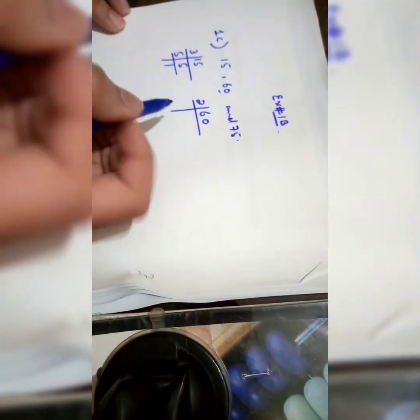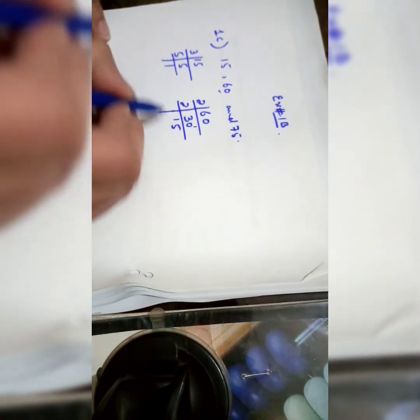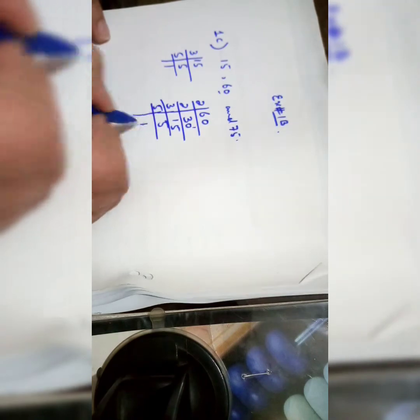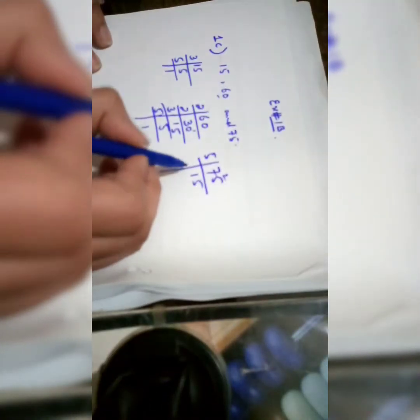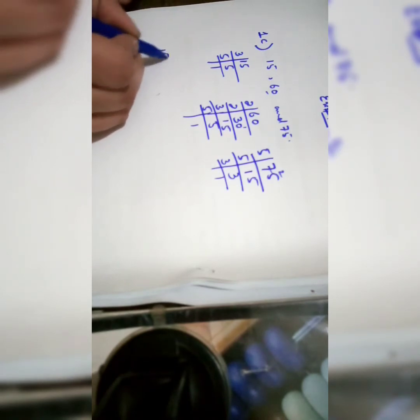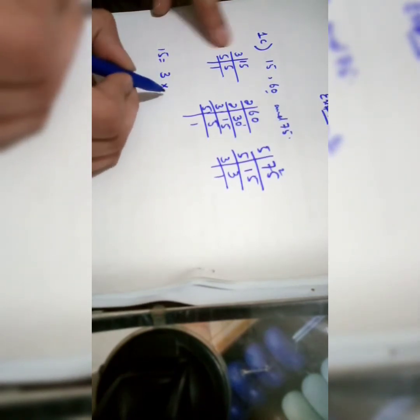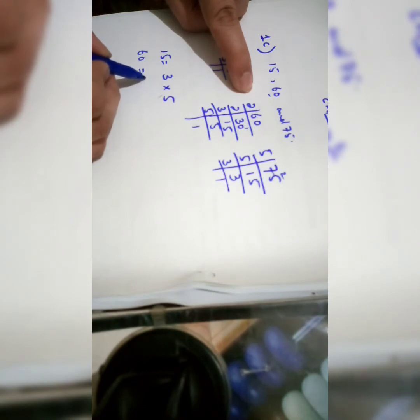Continuing with 60: 2 into 30 gives 15. Then 3 fives are 15 and 5 ones are 5. Now factors of 75: 5 ones are 5, 5 fives are 25, 5 threes are 15 and 3 ones are 3. So write down all factors: 15 equals 3 multiplied by 5. Factors of 60 are 2 multiplied by 2 multiplied by 3 multiplied by 5. And 75 has factors 5 multiplied by 5 multiplied by 3.